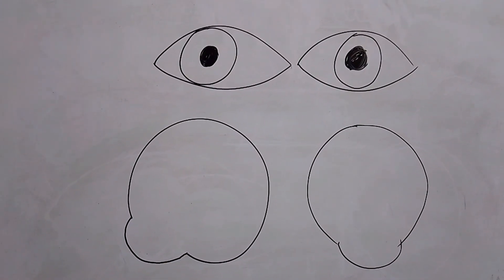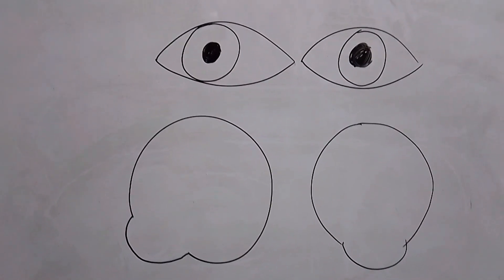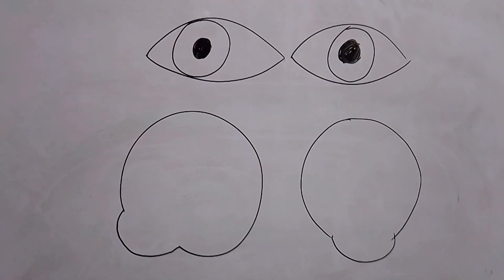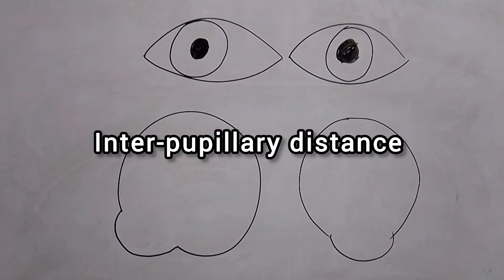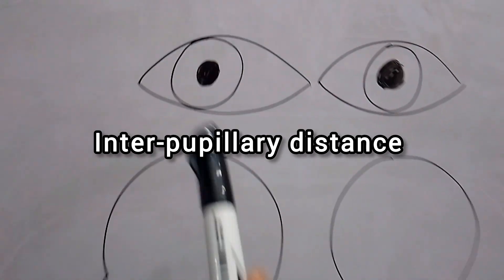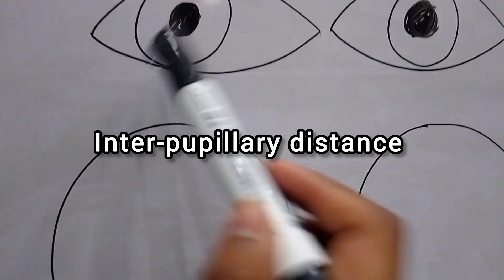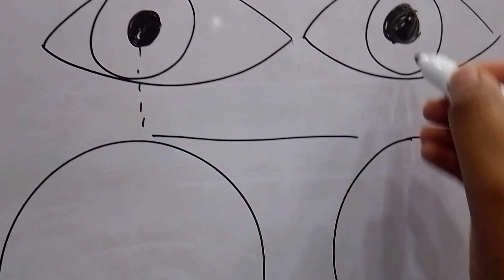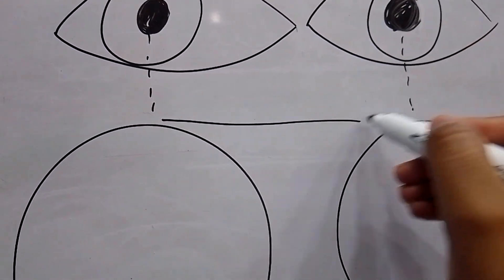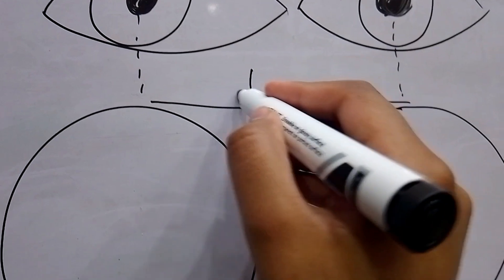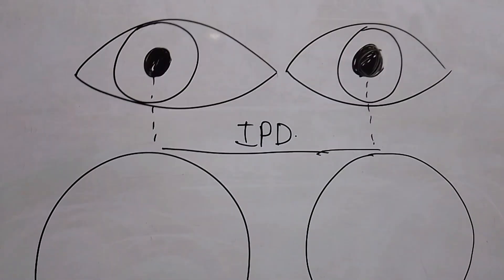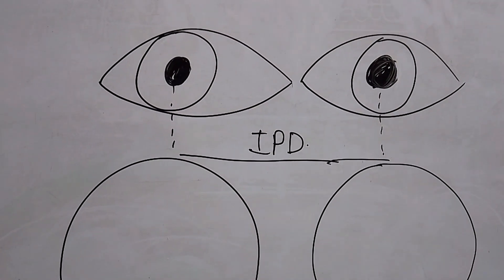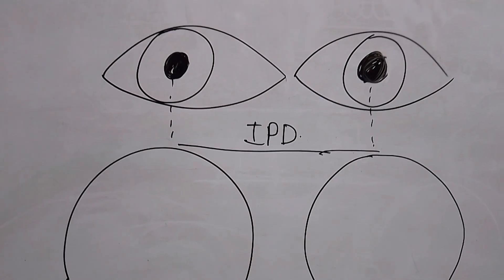Hello everyone and welcome back to StudEye. Today we are going to learn how we can measure the IPD. IPD is basically the interpupillary distance, or the distance between the centers of two pupils. We are going to learn how to evaluate the distance between two eyes.